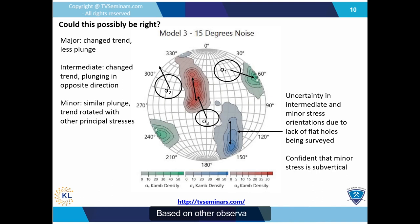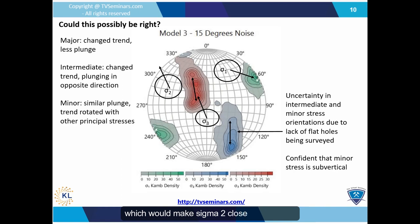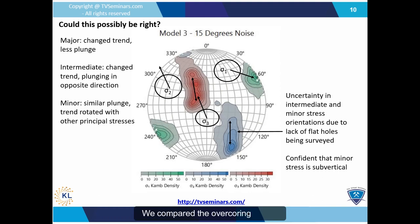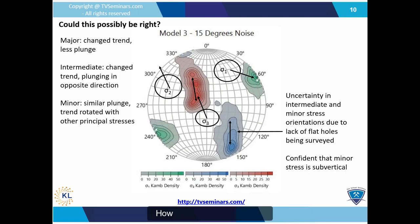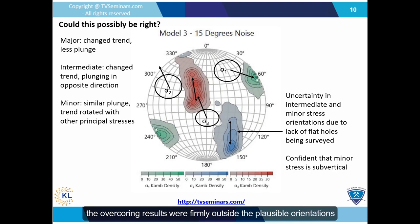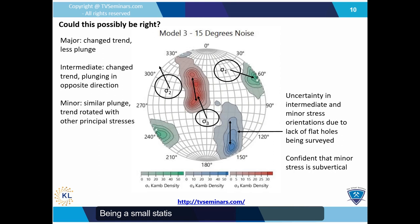Based on other observations, we are fairly confident that sigma 3 is close to vertical, which would make sigma 2 close to horizontal, and the orientation of sigma 1 was very well constrained. We compared the overcoring results from 6,300 to the borehole breakout heat map, expecting the overcoring results would be only slightly off. However, what we see is that the overcoring results were firmly outside the plausible orientations identified in the borehole breakout study. Being a small statistical outlier was now less of a possibility, so we had to go looking for other explanations for the differences.